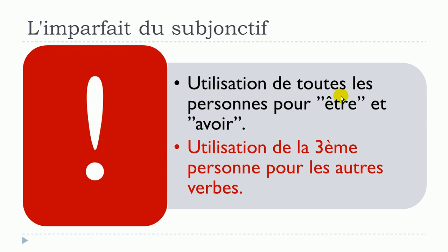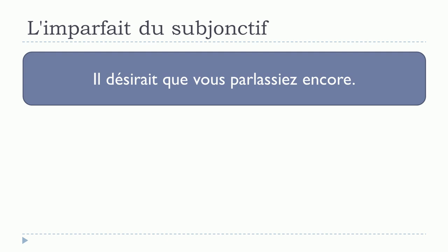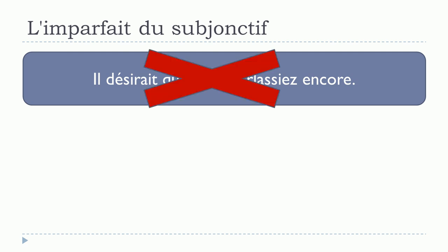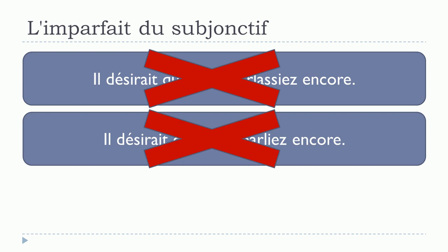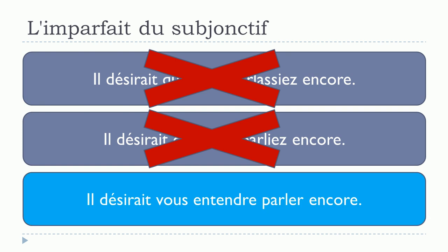Remember: all persons are used for être and avoir, but for other verbs only the third person singular or plural is used. For instance, il désire que vous parlassiez encore is technically correct, but it's too heavy. And il désirait que vous parliez encore is not an option because it is not correct. So the only way to have a correct sentence is to modify it: il désirait vous entendre parler encore.